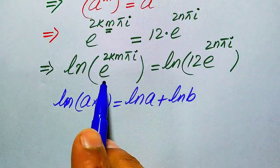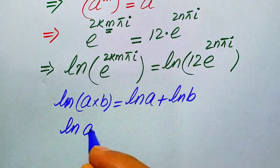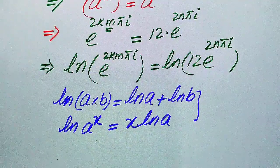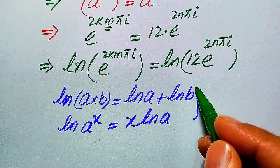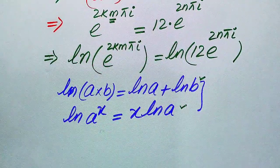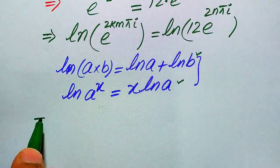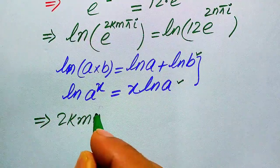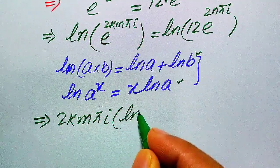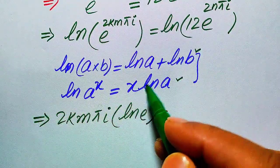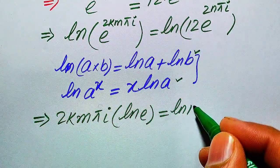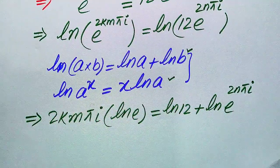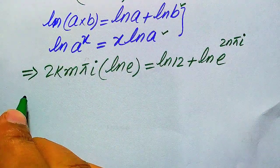On the right-hand side we apply the property log(a·b) = log a + log b. On the left-hand side we apply the property log(a^x) = x·log a, moving the exponent to the front. This gives 2km·π·i times log e, equals log 12 plus log of e to the power of 2n·π·i.